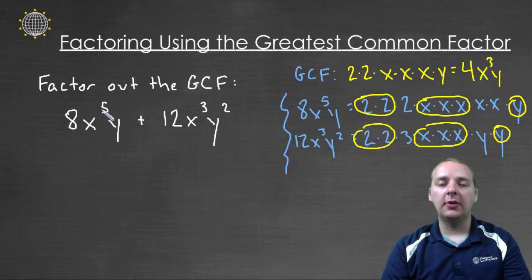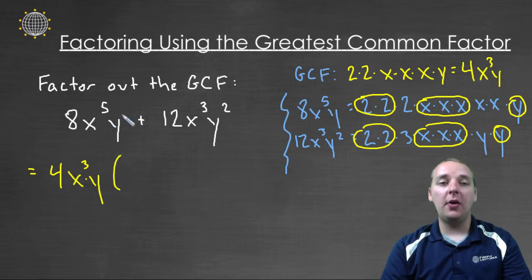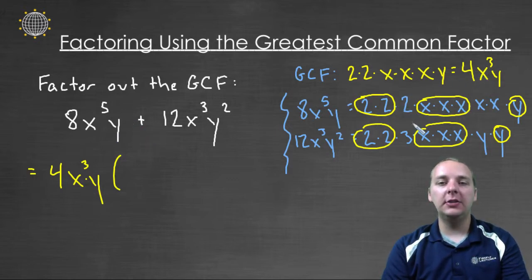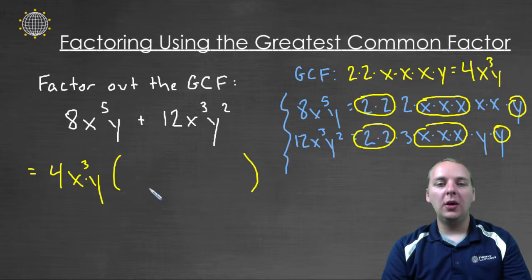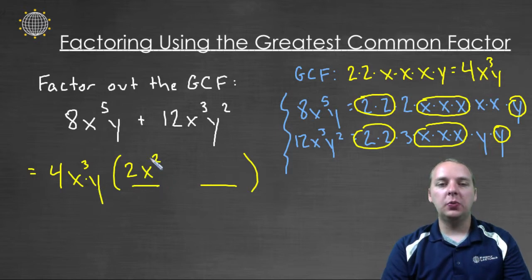Four x to the third y is a factor of the first term, which means it divides evenly into it, and also into twelve x to the third y to the second. So we can take that four x to the third times y and factor it out of each of these terms in our binomial. We ask ourselves what's still remaining: four times what gives me eight — that's four times two. X to the third times what gives us x to the fifth — that would be x to the second. And y times what gives me y — just times one, so I don't need to write it.